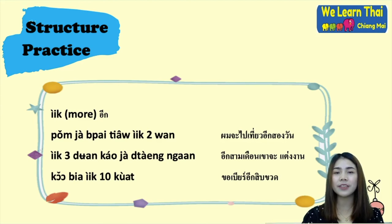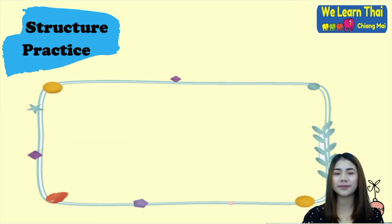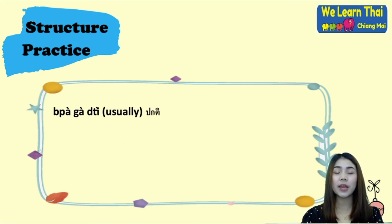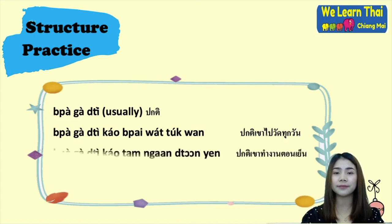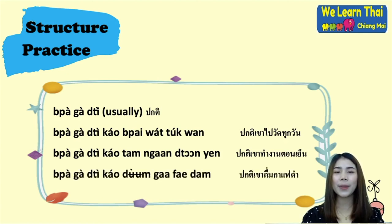Another example with อีก: ขอเบียร์อีกสิบขวดได้ไหม — 'May I have ten more beers?' The next word is ปกติ (pakati), meaning 'usually.' You will typically use ปกติ at the beginning of the sentence, before the subject. For example: ปกติเขาไปวัดทุกวัน — 'Usually he/she goes to the temple every day.' ปกติเขาทำงานตอนเย็น — 'Usually he/she works in the evening.' ปกติเขาดื่มกาแฟดำ — 'Usually he/she drinks black coffee.'